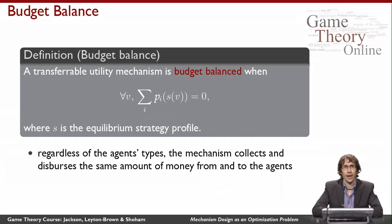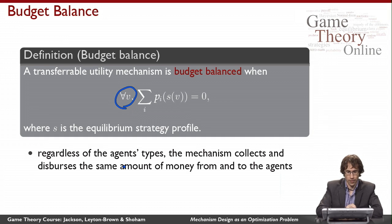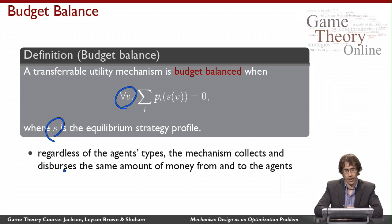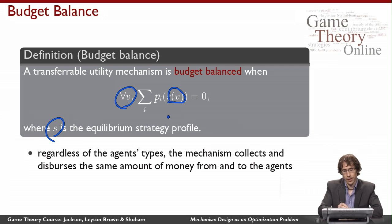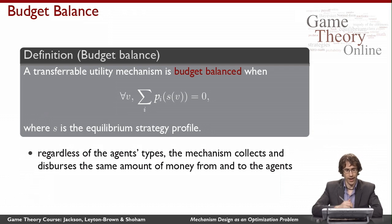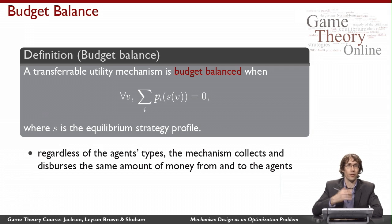Here's another constraint: budget balance. A transferable utility mechanism is budget-balanced when, for all joint valuations the agents might have and where S is the equilibrium strategy profile they follow, their equilibrium strategies yield payments that sum to zero. Regardless of the agents' types, in equilibrium the mechanism both collects and disperses the same amount of money — it neither makes nor loses any money as long as agents follow their equilibrium strategies.